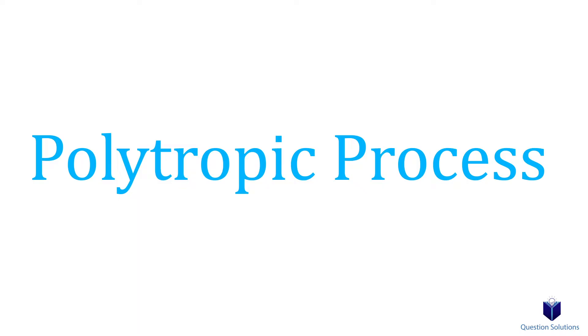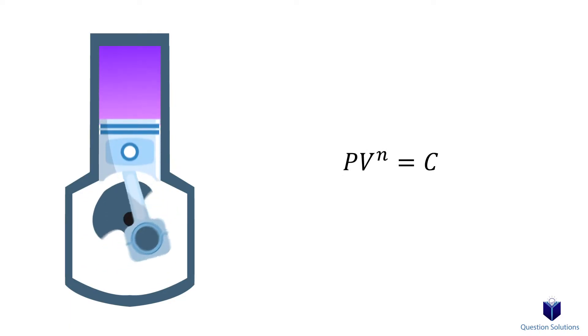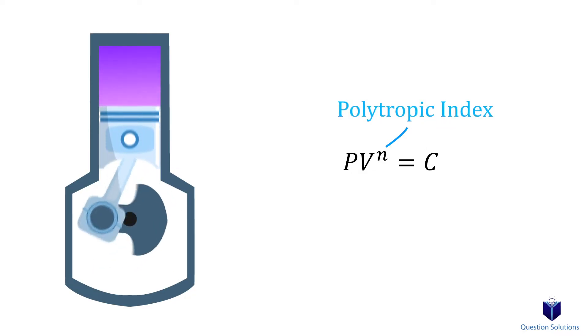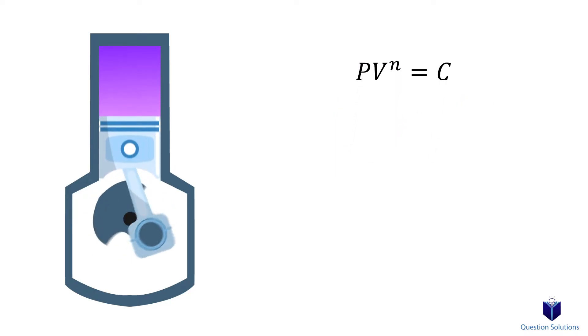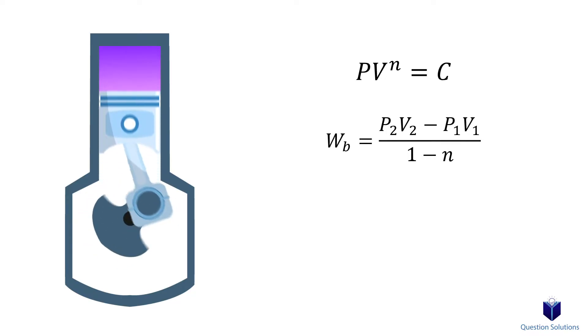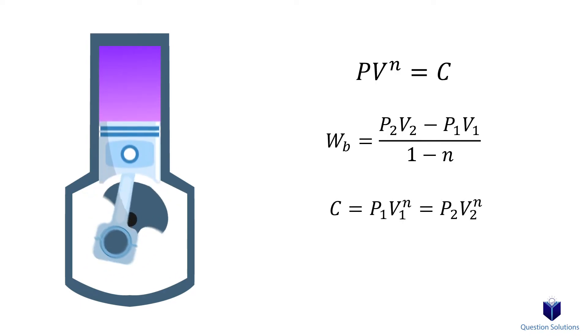One last thing we need to talk about is called a polytropic process. When gases expand and compress, pressure and volume can be related using this equation. If a process obeys this equation, then it's a polytropic process. Here C and N are constants. N is also called the polytropic index. There are a few other equations that are related to this process. For example, to find the boundary work when it comes to a polytropic process, we can use this equation. The constant C can be found using this equation. This part here can be used to compare initial pressure and volume to final pressure and volume, and to find the N constant.